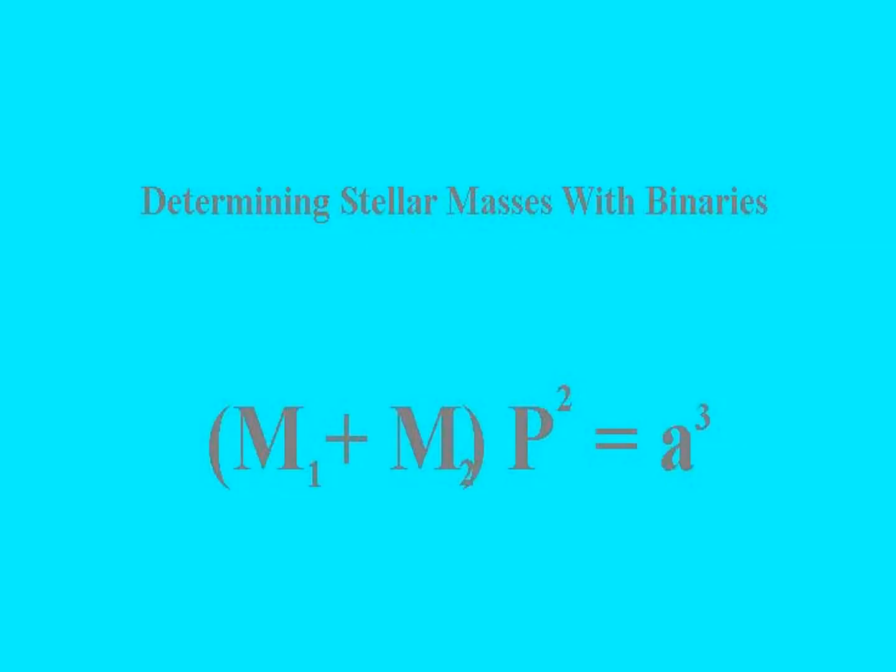Johannes Kepler, 1600, worked out that for a planet going around the sun, p squared equals a cubed, where p is measured in years and a is measured in AU. So a would be half of the longest distance across the elliptical orbit.